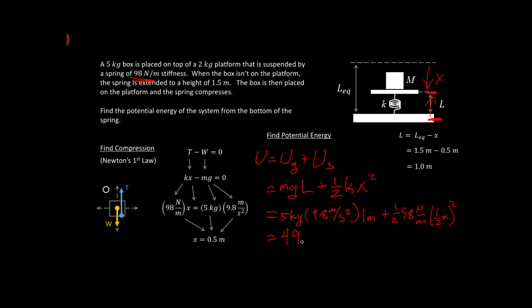newtons, or joules, excuse me, newtons times meters, so joules, plus one-half times 98 times one-half squared. So that's one-eighth of 98, which is 12.25. And that's going to be 51.25 joules.